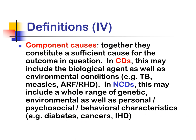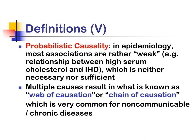Component causes together constitute a sufficient cause for the outcome in question. This may include the biological agent as well as environmental conditions. In non-communicable diseases, this may include a whole range of genetic, environmental, personal, psychosocial, and behavioral characteristics. In epidemiology, most associations — such as the rather weak relationship between high serum cholesterol and ischemic heart disease — are probabilistic causality, neither necessary nor sufficient. Multiple causes result in what is known as the web of causation or chain of causation, which is very common for non-communicable diseases.